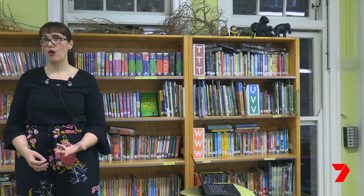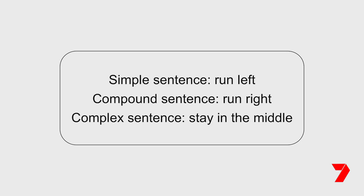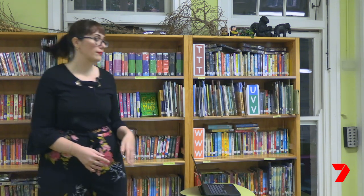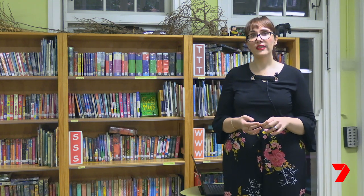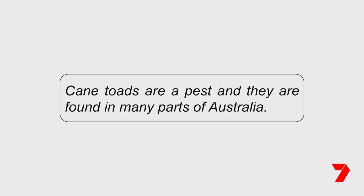Is this a simple, compound, or complex sentence? Cane toads are a pest and they are found in many parts of Australia. I think that sentence is an example of a compound sentence, so I'm going to run to the right side of the room. I know this is a compound sentence as it contains two main clauses joined by the coordinating conjunction 'and'. Both clauses contain a subject and a verb and make sense on their own. I'm confident this is a compound sentence.